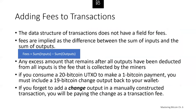The data structure of transactions does not have a field for fees. Instead, transaction fees are implied as the difference between the sum of the inputs and the sum of the outputs. Any excess amount remaining after all outputs are deducted from all inputs is the fee collected by miners. The formula is: transaction fees = sum of inputs minus sum of outputs. This is important to understand — if you're writing software to construct transactions, you want to make sure you don't inadvertently include a very large fee by underspending the inputs. Some early Bitcoin applications made this mistake and made rather large payments to miners.